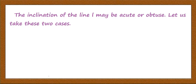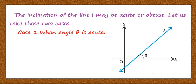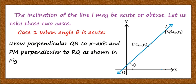The inclination of a line L may be acute or obtuse. Let us take these two cases. In the first case, when angle theta is acute, let us take a line L such that the angle made by the line with the positive direction of x-axis is theta. Let the two points P(x1, y1) and Q(x2, y2) be on the line, and draw perpendicular QR to the x-axis and PM perpendicular to RQ as in the figure.